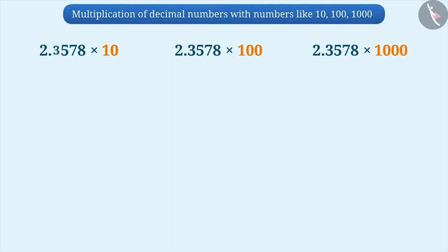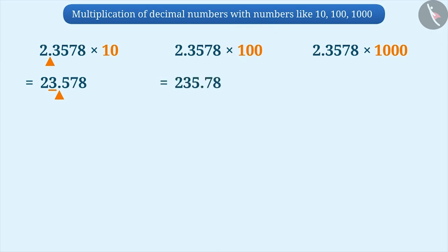Suppose we need to multiply 2.3578 by 10. The answer will be 23.578. If we observe this, the digits in the number to be multiplied, that is 2.3578, and the digits in the answer are the same. Similarly, if we multiply 2.3578 by 100, the digits in the number and in the answer are also the same, but this time the decimal point has shifted two places to the right.